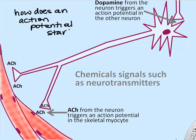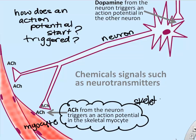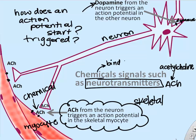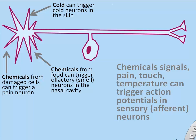What triggers an action potential in the first place? Both neurons and myocytes have action potentials. In skeletal myocytes, a chemical released by neurons — called a neurotransmitter — triggers it. In the case of skeletal muscle, that chemical is almost always acetylcholine. For neurons, it could be acetylcholine, dopamine, or serotonin. What happens is that the chemical triggers an increase in entry of calcium, sodium, or any positive ion into the cell, and when the inside of the cell becomes positive, it triggers an action potential.